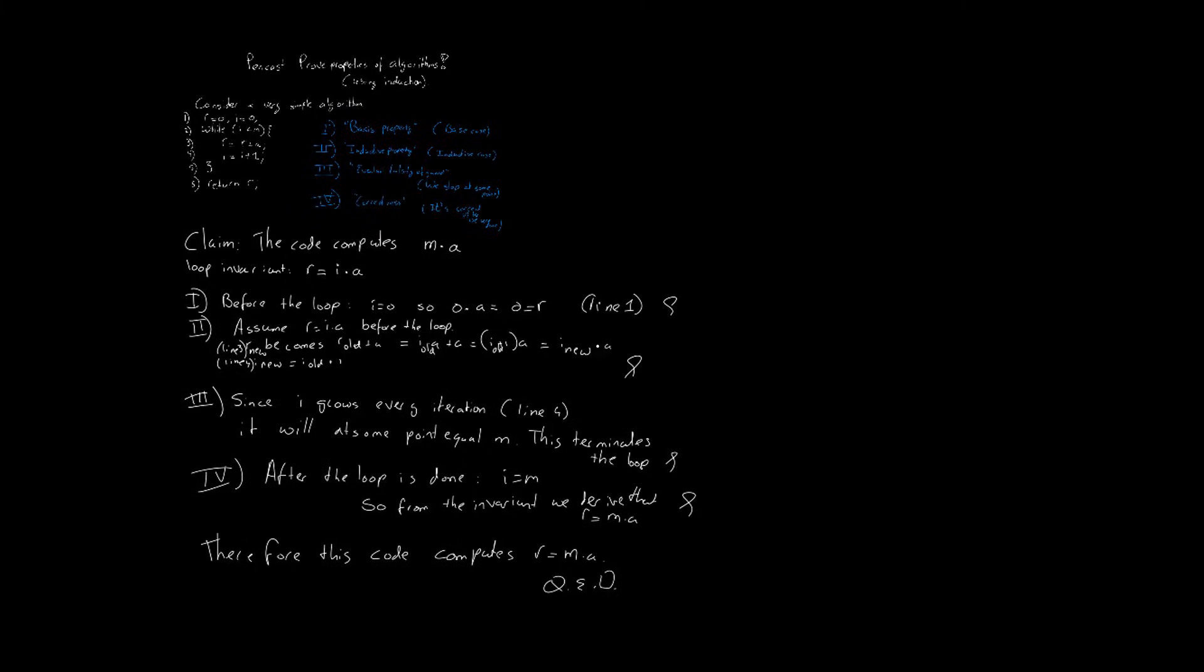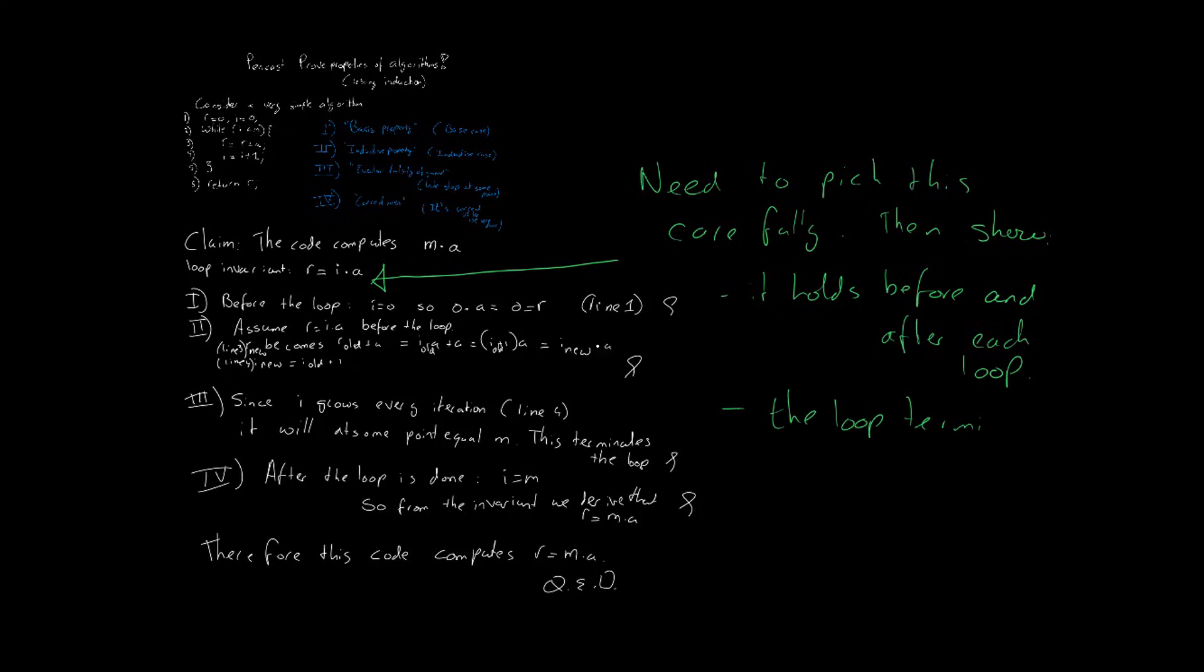Now, the main thing in a proof like this is to carefully choose your loop invariant. And, this isn't always easy. But, you need to pick one for which you can show that it holds before and after every iteration of the loop. You then need to show that the loop actually terminates.